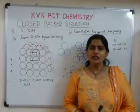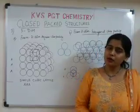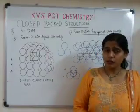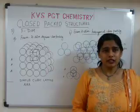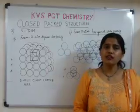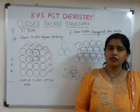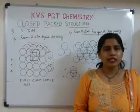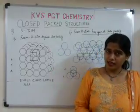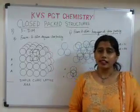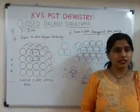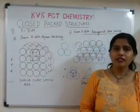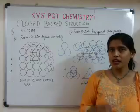Dear students, first let's have a recap of two-dimensional packing. In two-dimensional packing, we have two kinds. First is the square close packing — the type of arrangement is AAA. Second type is hexagonal close packing, where the type of arrangement of atoms is ABAB.